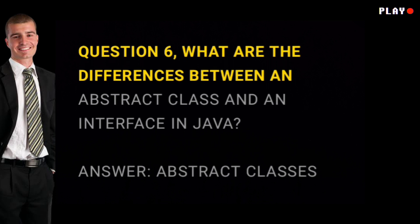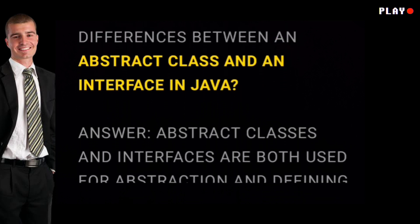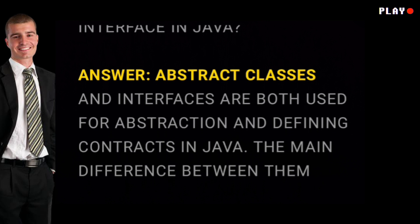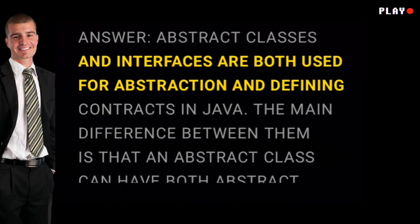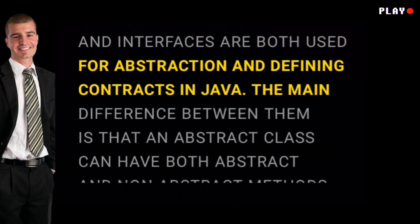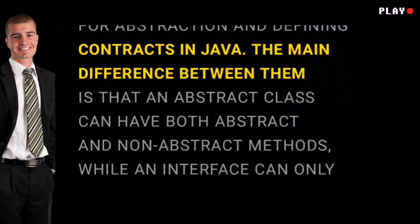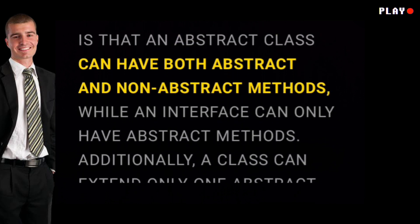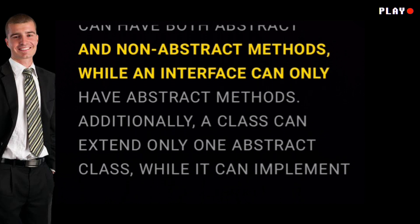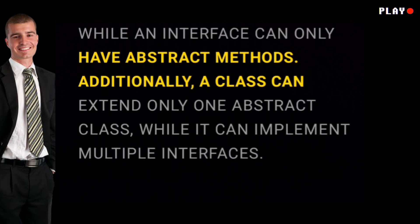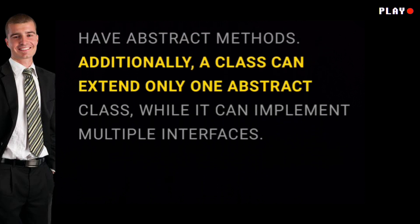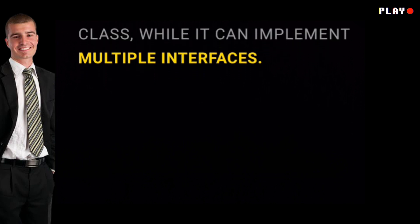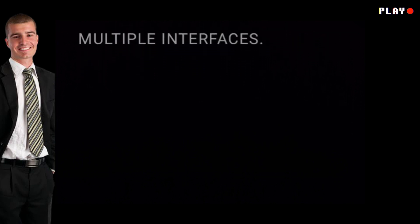Question six: what are the differences between an abstract class and an interface in Java? Answer: abstract classes and interfaces are both used for abstraction and defining contracts in Java. The main difference between them is that an abstract class can have both abstract and non-abstract methods, while an interface can only have abstract methods. Additionally, a class can extend only one abstract class, while it can implement multiple interfaces.